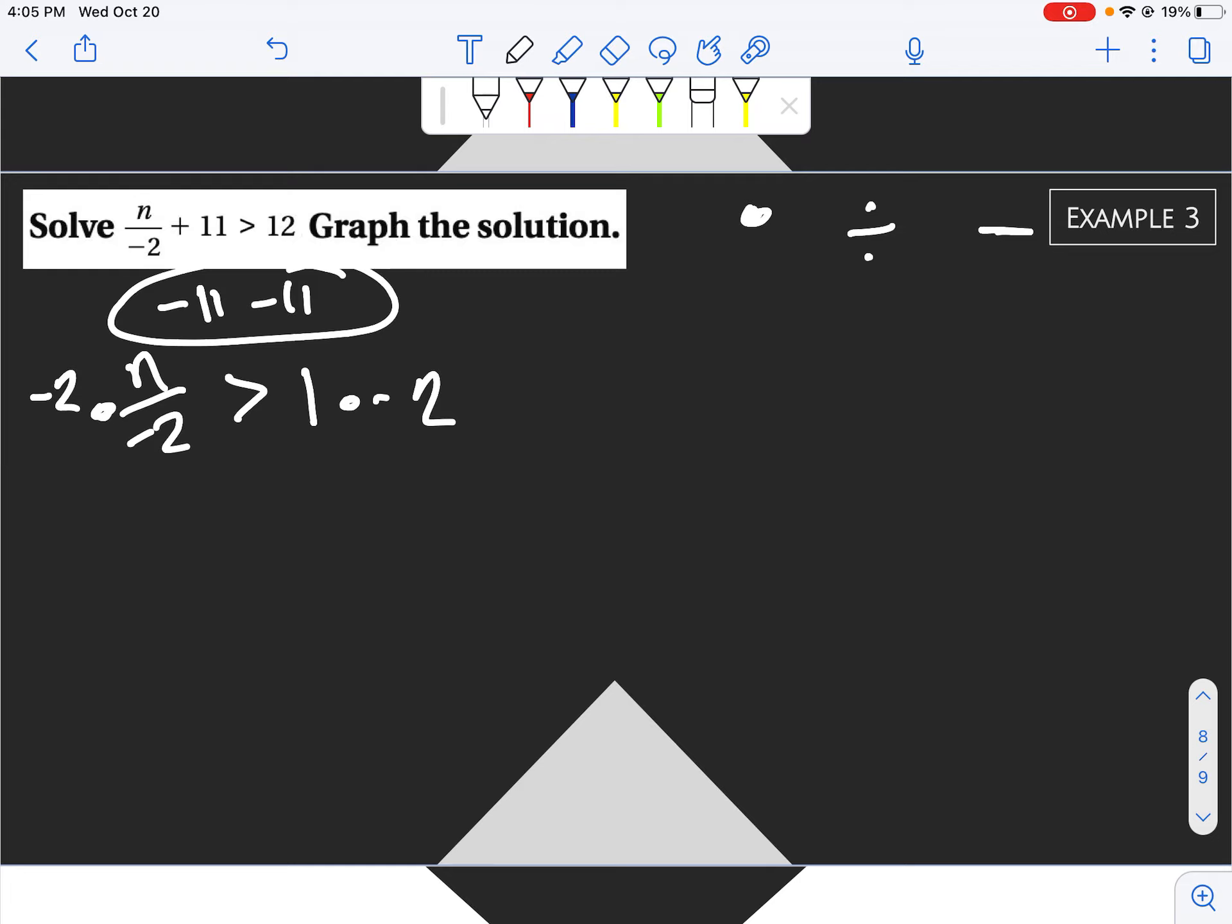Now we multiply by a negative number, so we switch our sign. We are left with n is less than negative 2.